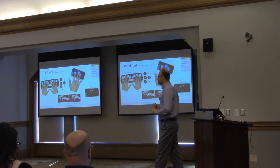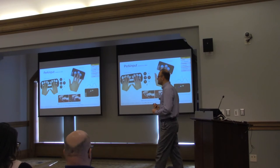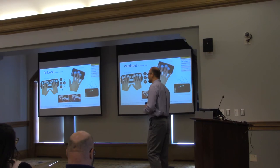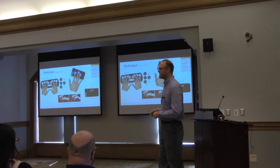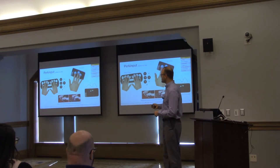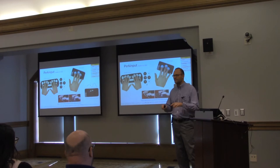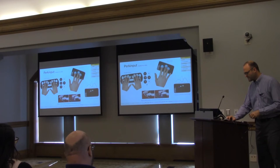Moving up the ability hierarchy into literacy abilities, we explored Perkinput, mostly by Shiri Azenkot, a professor now at Cornell Tech. The idea was to leverage people's ability to do Braille input as they would on a Perkins Brailler, but with touch screen devices. This allowed nice things like tracking the drift of hands over time and maximizing accuracy — not by having them hit specific bounded targets, but by probabilistically matching their finger positions to the most likely letters for those positions.